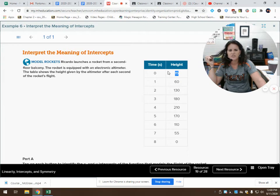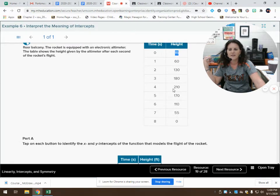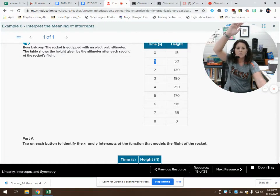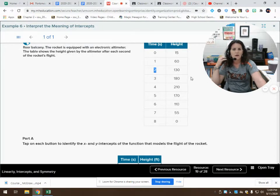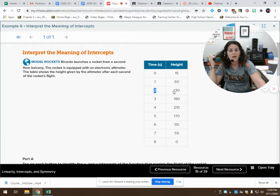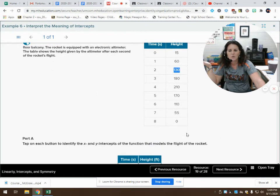I'm assuming it's feet. Does it say somewhere that it's in feet or did I just assume that? Because we probably shouldn't assume. But I'm going to assume anyway. So after it's been in the air for one second, it's now 60 meters high or feet or whatever. After two seconds, it's 130 feet or meters or whatever unit we're talking about. And we can keep on going.